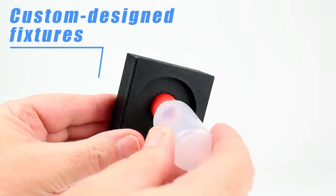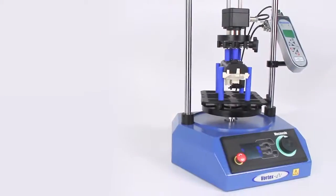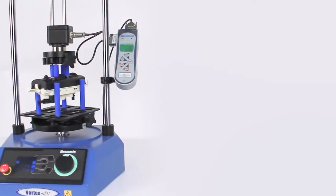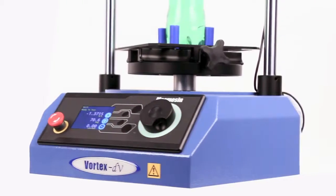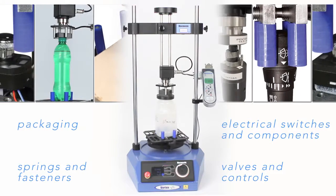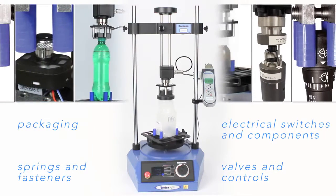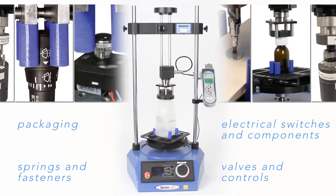With its speed range increased to 30 RPM and an angular resolution of 0.1 degrees, the Vortex DV is ideally suited to applications in packaging, electrical switches and components, valves and controls, springs and fasteners and many more.